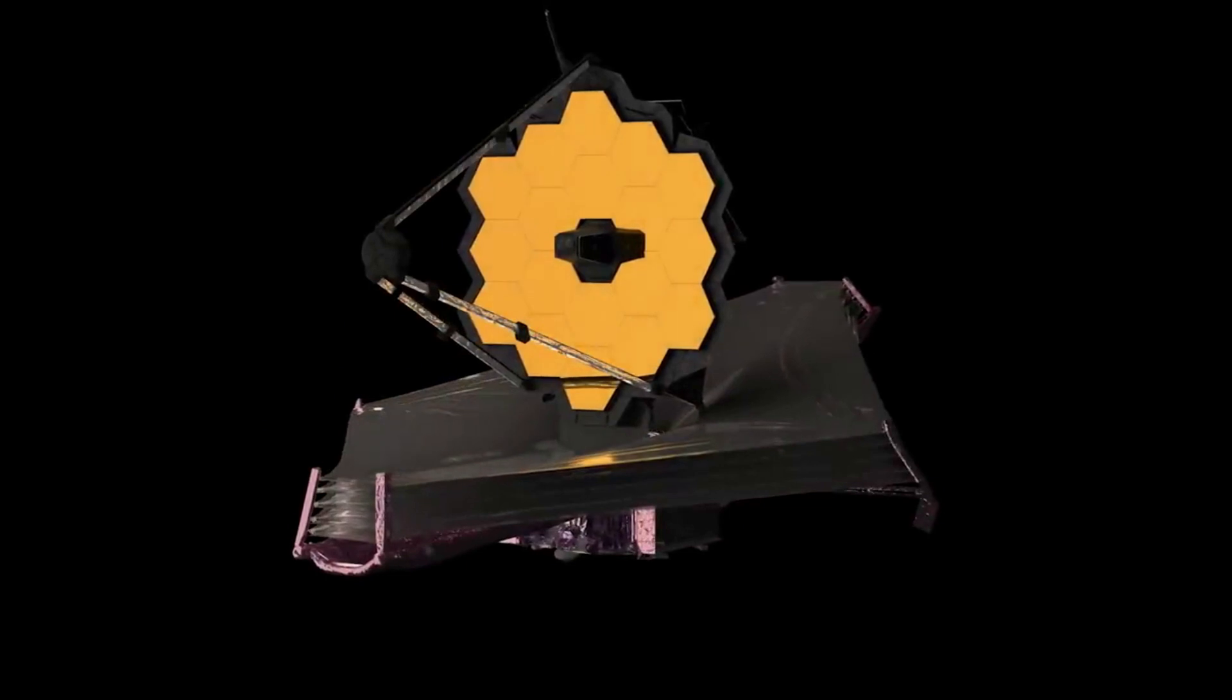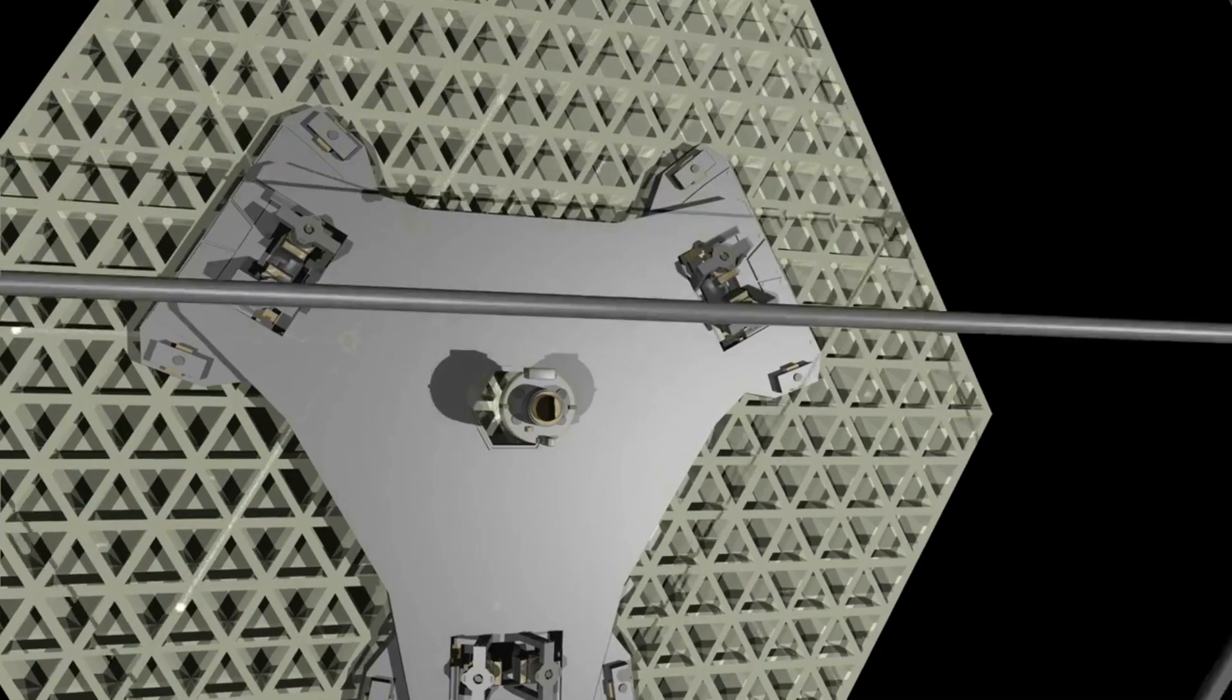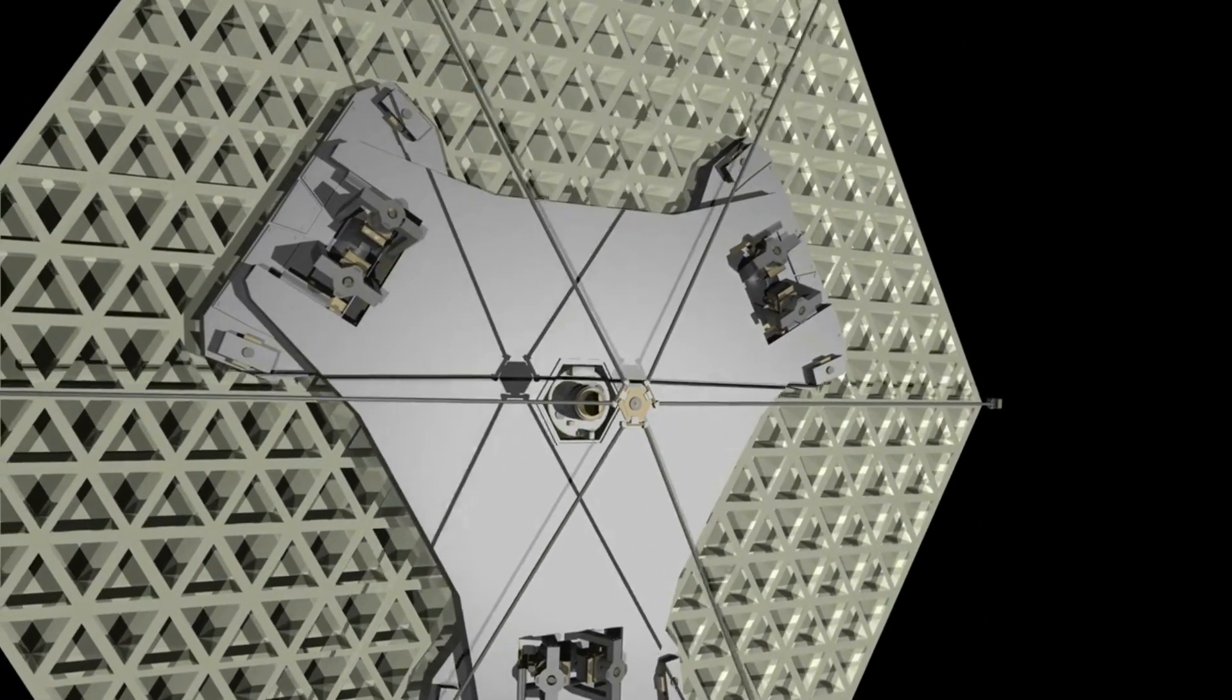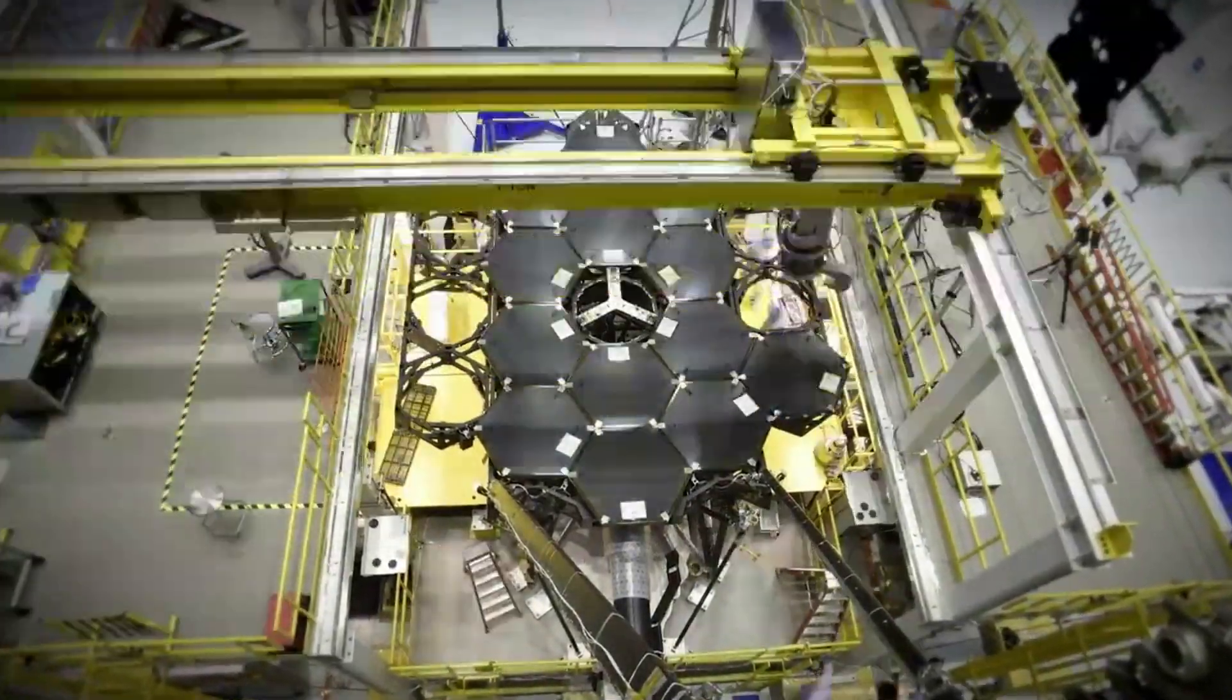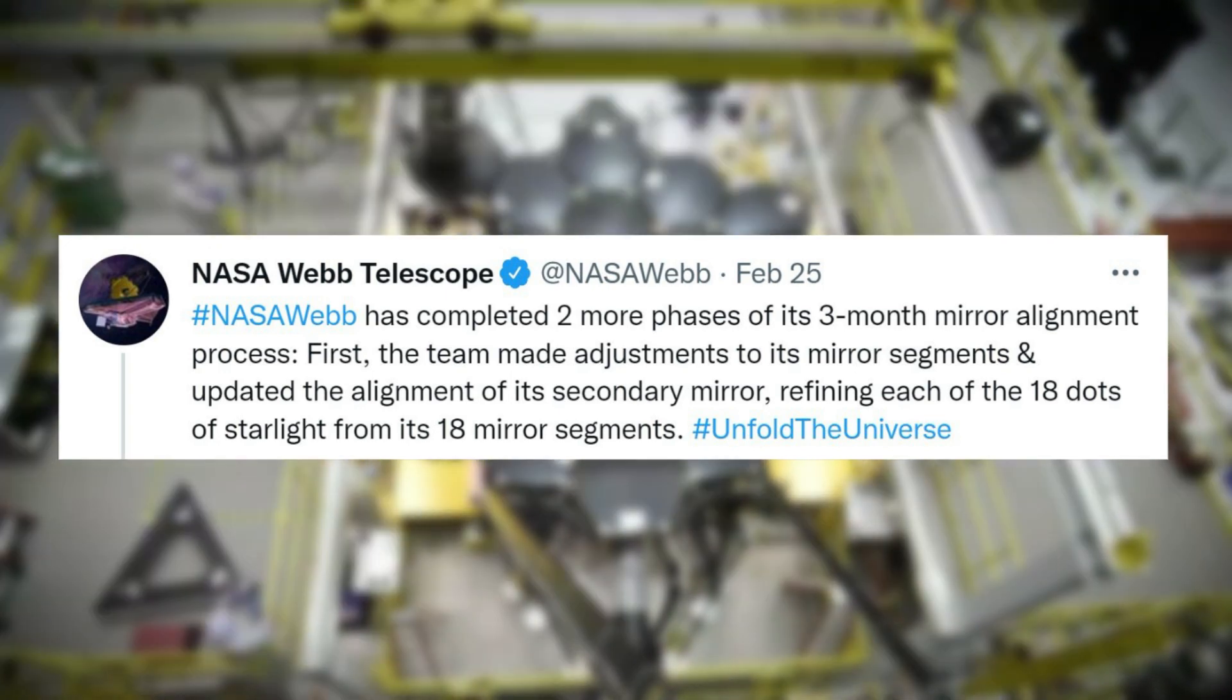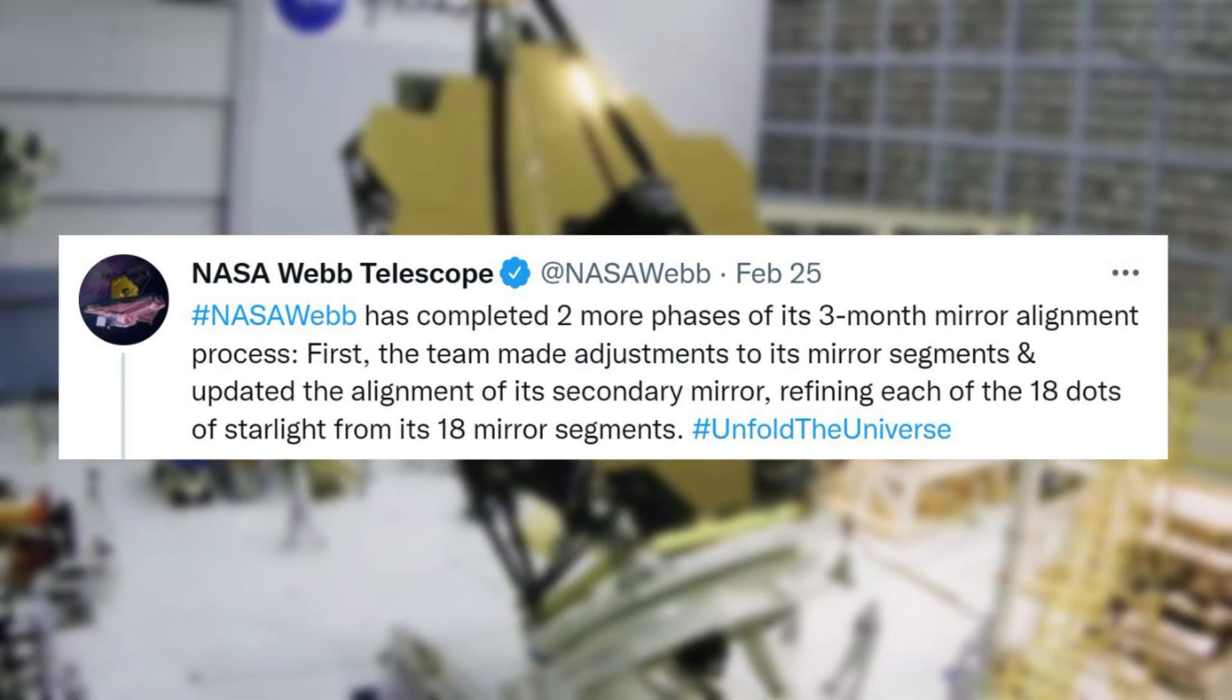Thanks to NASA, we have been provided updates along the way which keep us in the know of what Webb is up to. One of the first recent updates from NASA regarding Webb had to do with alignment. Specifically, on February 25th, NASA tweeted saying NASA has completed two more phases of its three-month mirror alignment process.